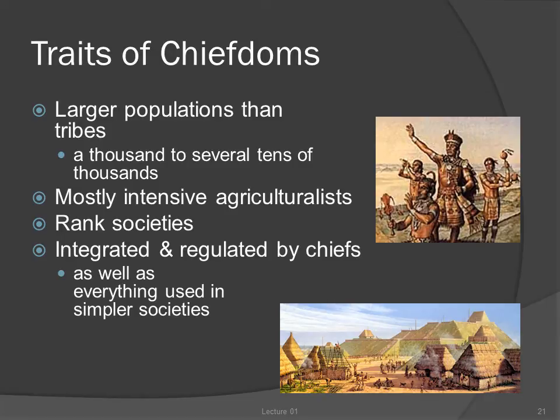The next most complex culture is the chiefdom. A chiefdom generally has anywhere from a thousand to several tens of thousands of people. To feed that many people in a contiguous territory, chiefdoms almost have to be agriculturalists. There are examples of hunter-gatherer chiefdoms, though, most notably in the Pacific Northwest and in California.